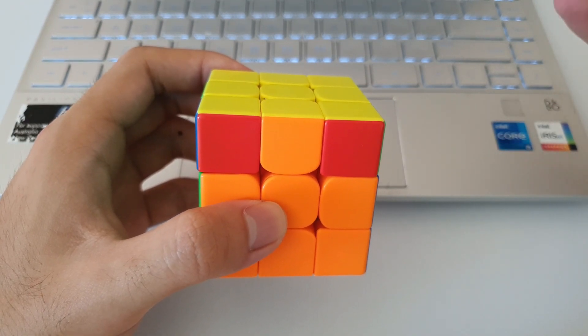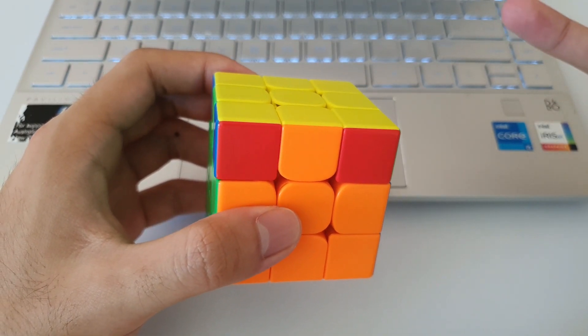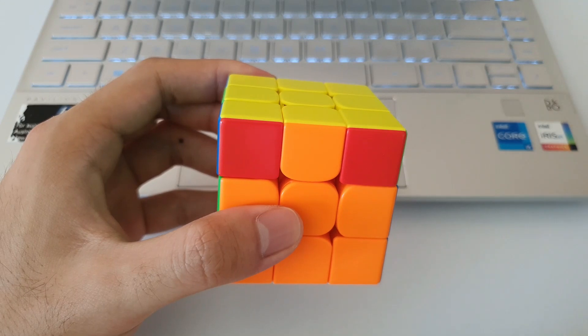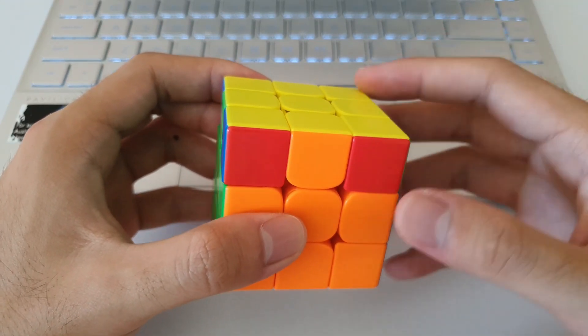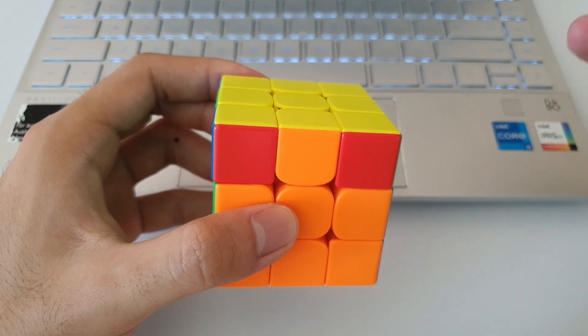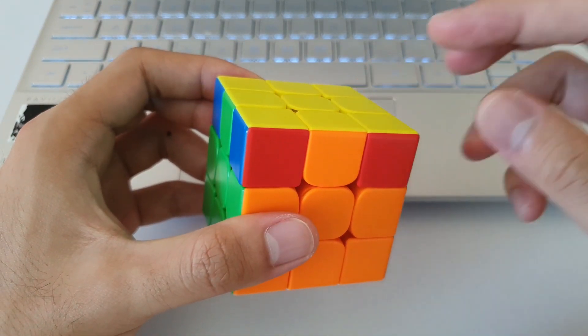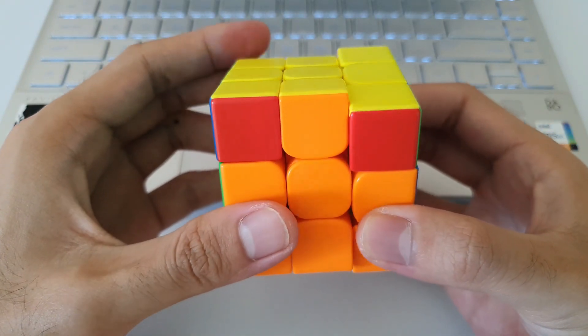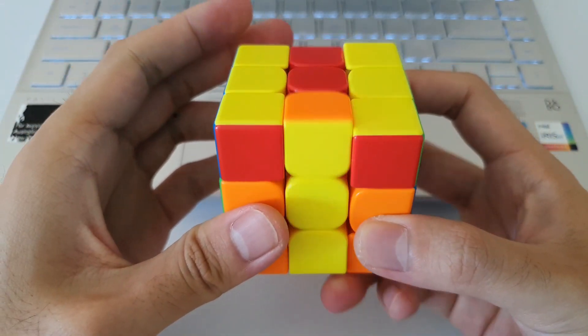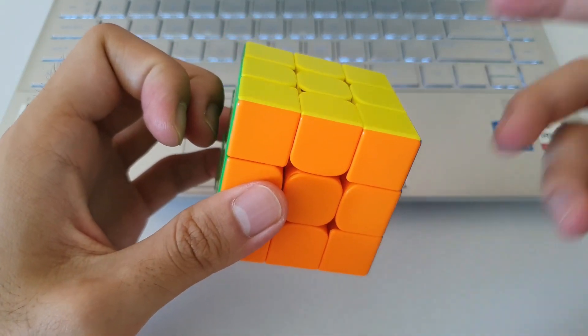So H perms are special because you can do the AUF before you do the algorithm, and that's because the algorithm can be done from any angle. I usually just do the algorithm first and then AUF afterwards anyway. So if I had this case in a solve, I would usually just do the H perm first, and then do the U2 at the end.